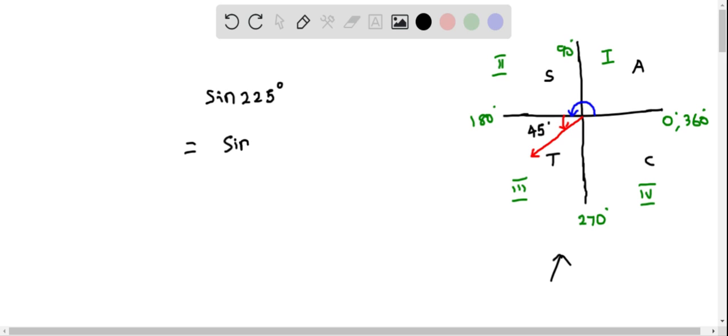I can rewrite this as sine of 180 plus 45 degrees. I'll rewrite this as a sum of two angles. Now we have to determine where this angle actually lies.